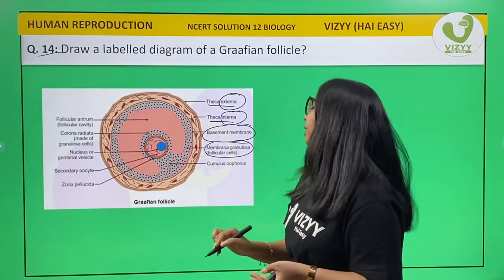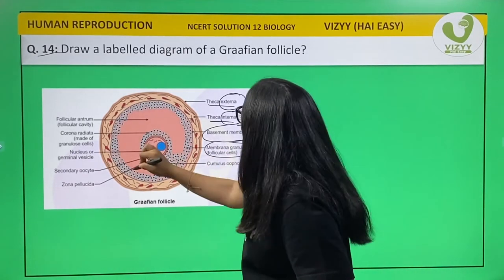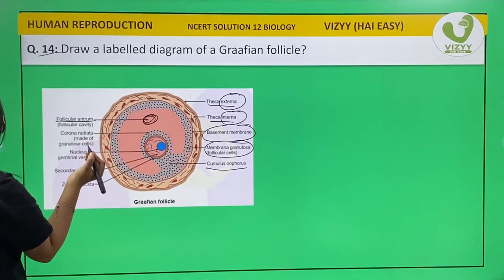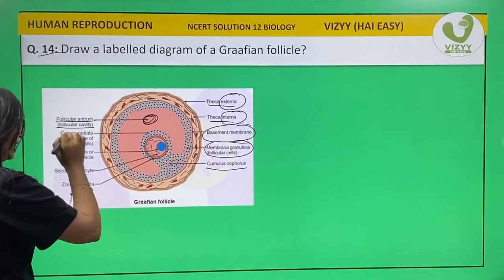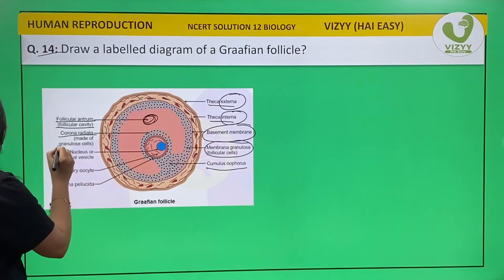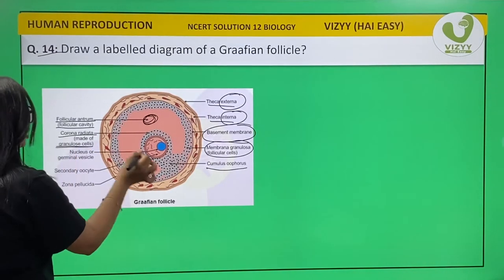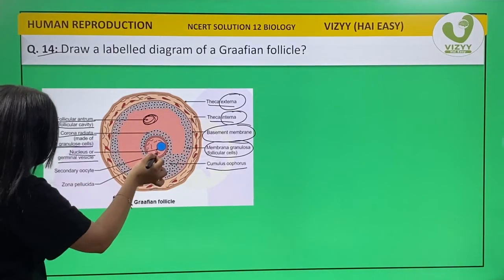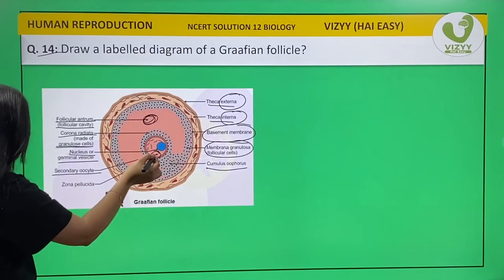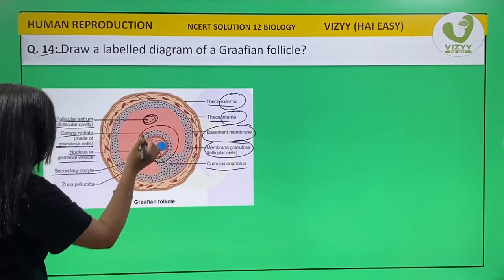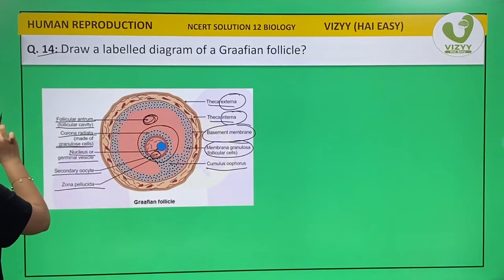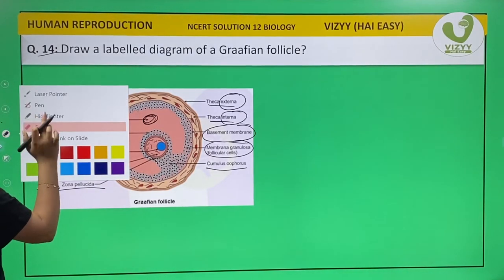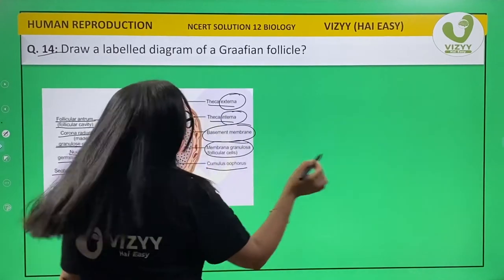The follicular cells are known as membrana granulosa. Inside comes the cumulus oophorus. The cavity is known as the follicular antrum or follicular cavity. Inside that cavity we have the corona radiata, which is made up of granulosa cells. Inside the corona radiata we have the nucleus or germinal vesicle, and covering the primary oocyte is the membrane known as zona pellucida.